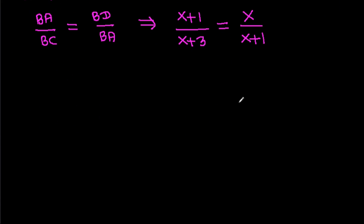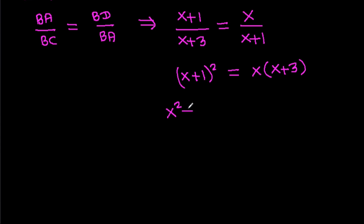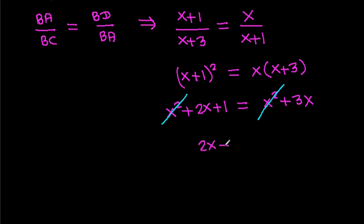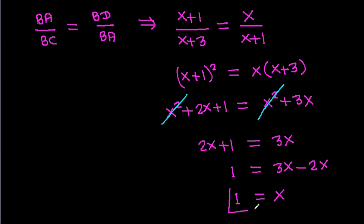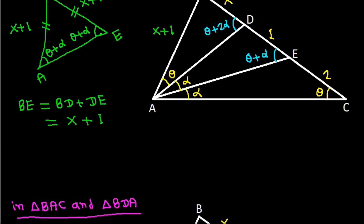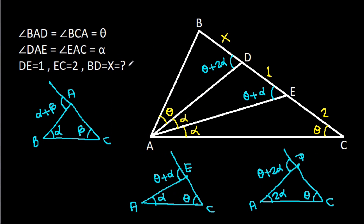Cross multiplying: (X minus 1)(X minus 1) equals X times (X minus 3). Expanding: X squared plus 2X plus 1 equals X squared plus 3X. The X squared terms cancel, giving 2X plus 1 equals 3X, so 1 equals X. Therefore X is 1.